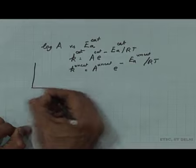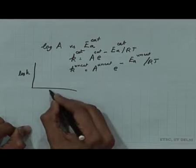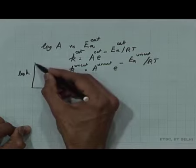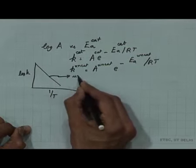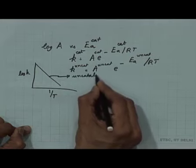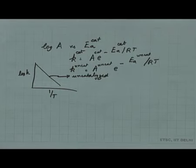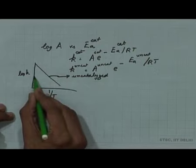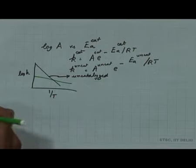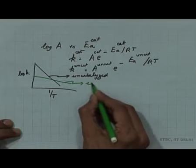We looked at this: if you plotted log k versus 1/T, you had the uncatalyzed reaction which had a large slope and a high intercept, and the catalyzed reaction which had a smaller slope.